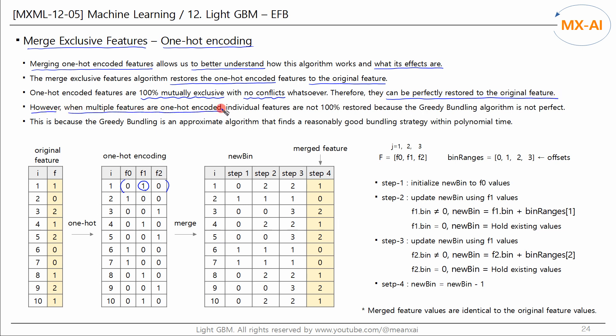individual features are not 100% restored because the greedy bundling algorithm is not perfect. This is because the greedy bundling is an approximate algorithm that finds a reasonably good bundling strategy within polynomial time.